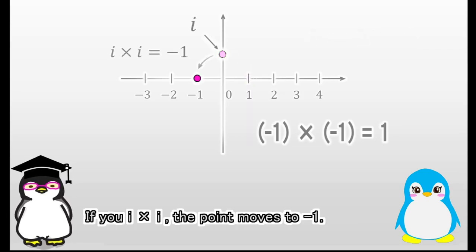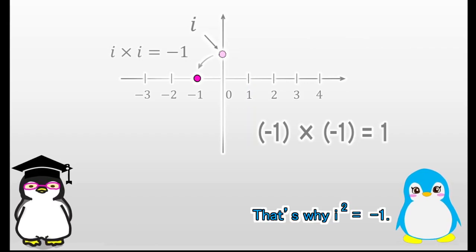If you multiply I by I, the point moves to negative 1. That's why the square of the imaginary unit is equal to negative 1.